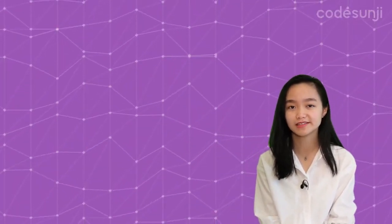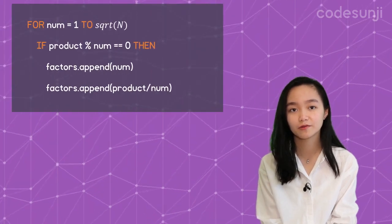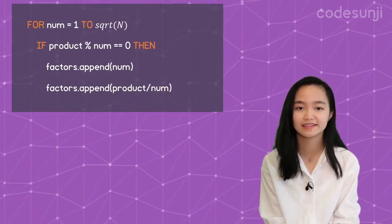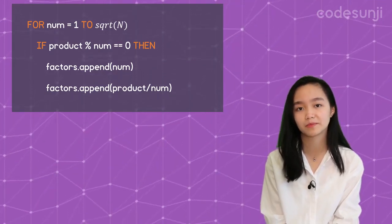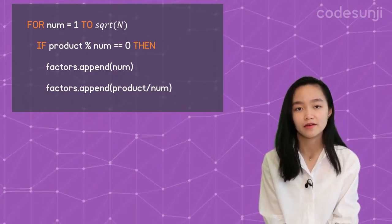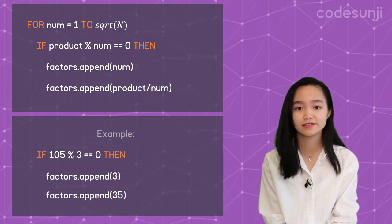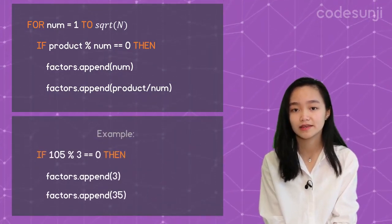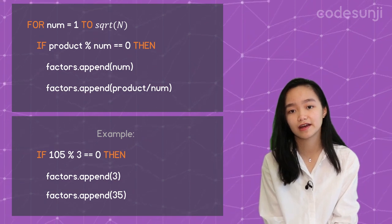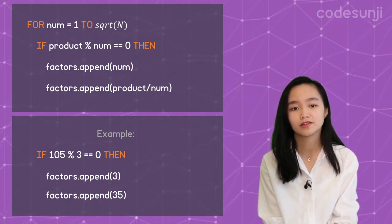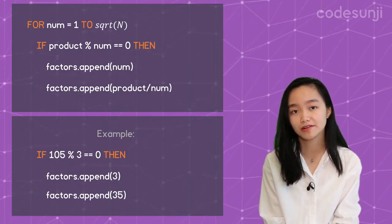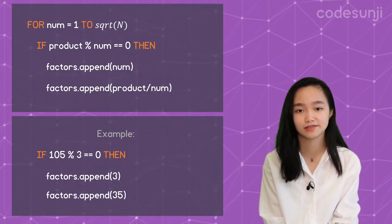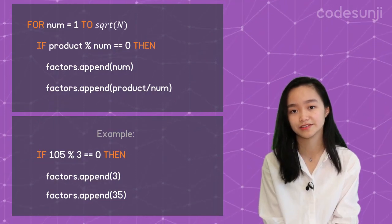To be more efficient, we can go through each number from 1 to the square root of the product instead. When a number is confirmed as a factor, we also add the product divided by it. For example, we found that 105 is divisible by 3, so we also add 105 divided by 3, which is 35, to our list of factors, making our program more efficient.